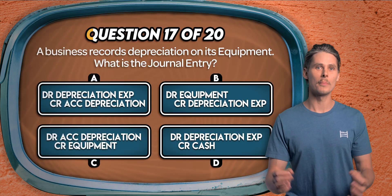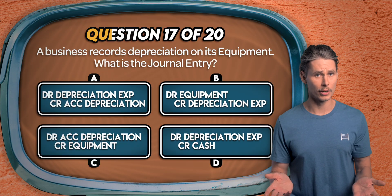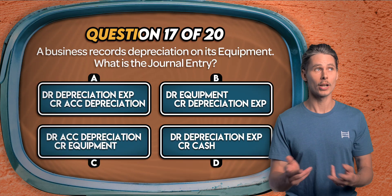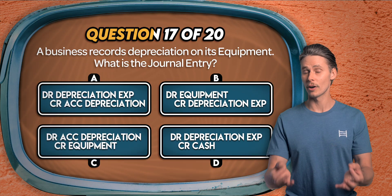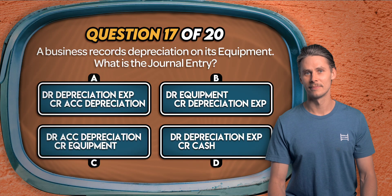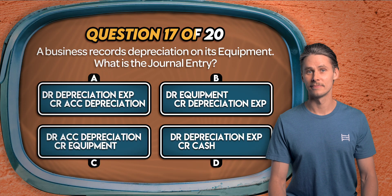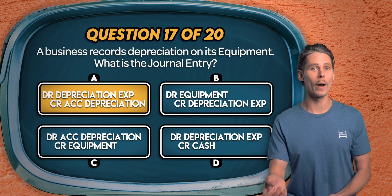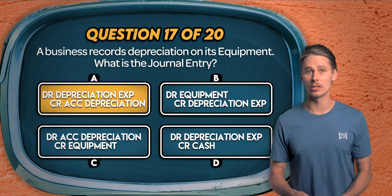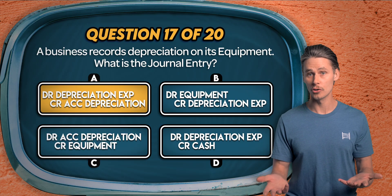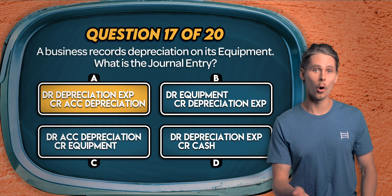Question 17. A business records depreciation on its equipment. What is the journal entry? Is it debit depreciation expenses credit accumulated depreciation, debit equipment credit depreciation expenses, debit accumulated depreciation credit equipment, or debit depreciation expenses credit cash? It's A. Depreciation recognizes the use, wear and tear on a fixed asset over time. We debit depreciation expenses to record the allocated cost on the income statement, and we credit accumulated depreciation — a contra asset — to reduce the equipment's book value on the balance sheet.